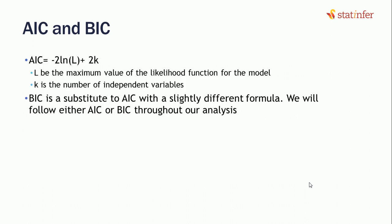AIC, which is Akaike Information Criteria, the formula would be minus 2ln(L) plus 2k. The L is the maximum value of the likelihood function for the model, and k is the number of independent variables. From here we can see that it also depends on the number of variables, just like adjusted R-square. And BIC is a substitute to AIC with a slightly different formula. We will follow either AIC or BIC throughout our analysis.